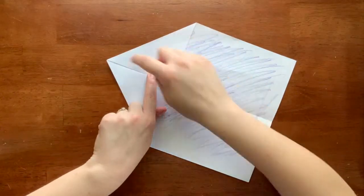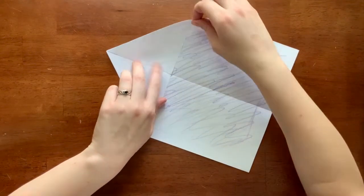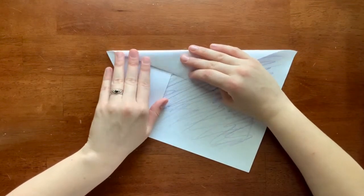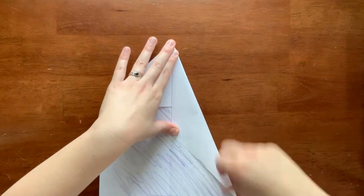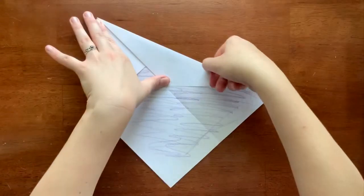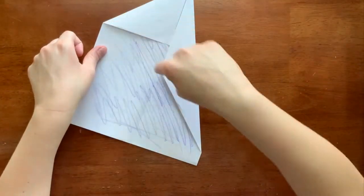Then fold again. So this whole edge is going to come along that middle line again. Now we're going to do the same thing on the other side. So this corner is going to come here.